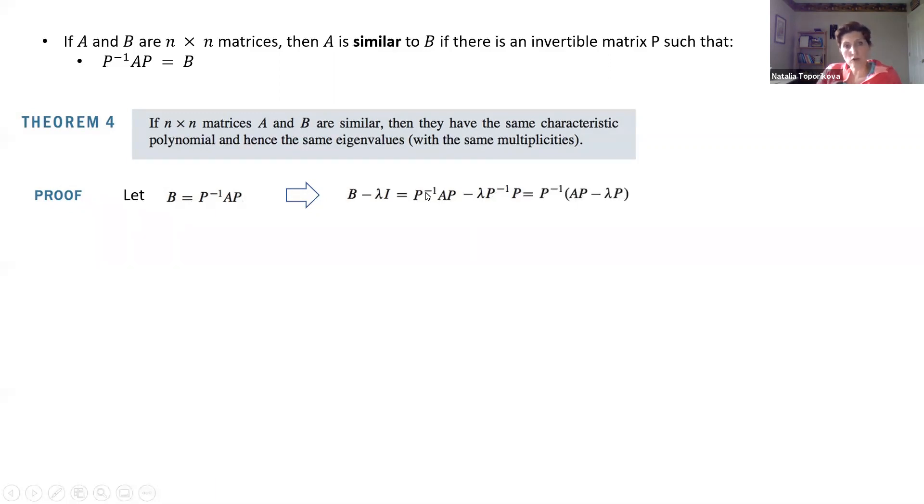So now we will factor out this inverse of P to the left, and we'll end up with this expression which still contains both elements containing matrix P. So we factor out now matrix P to the right. And what we get is very interesting. We start with the matrix B minus lambda I, and we end up with a similarity equation applied to the matrix A. So what we get is matrix B minus lambda I is actually similar to matrix A minus lambda I. Very interesting property.